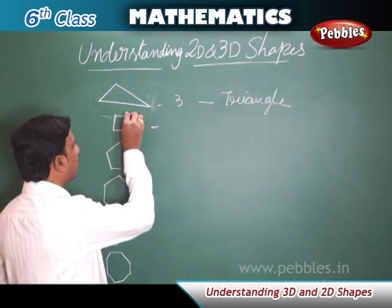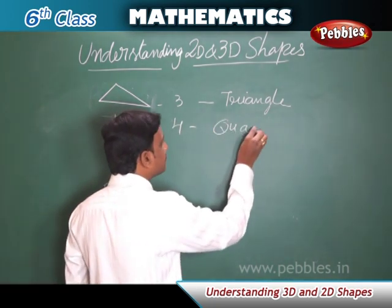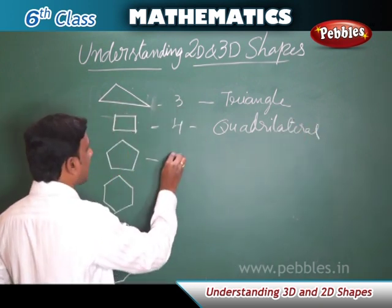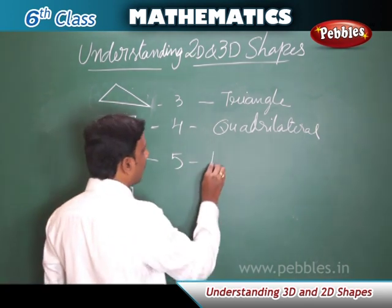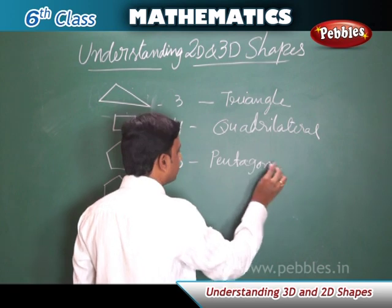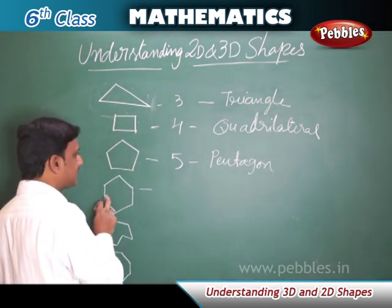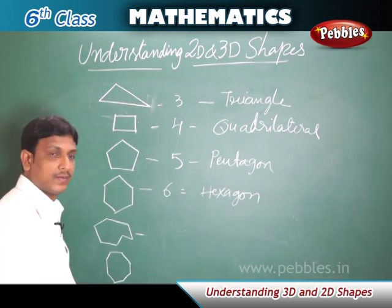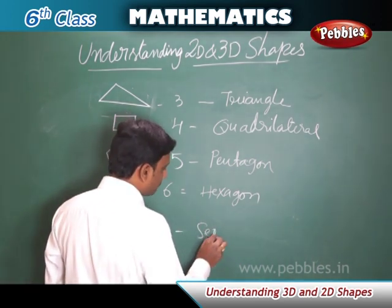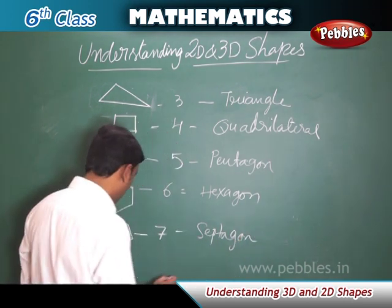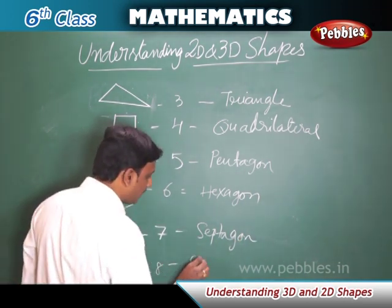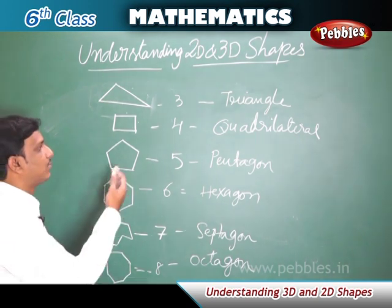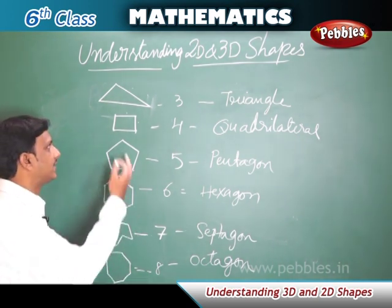A polygon with four sides is called a quadrilateral. A polygon with five sides is called a pentagon. A polygon with six sides is called a hexagon. The polygon with seven sides is called a heptagon, and the polygon with eight sides is called an octagon.